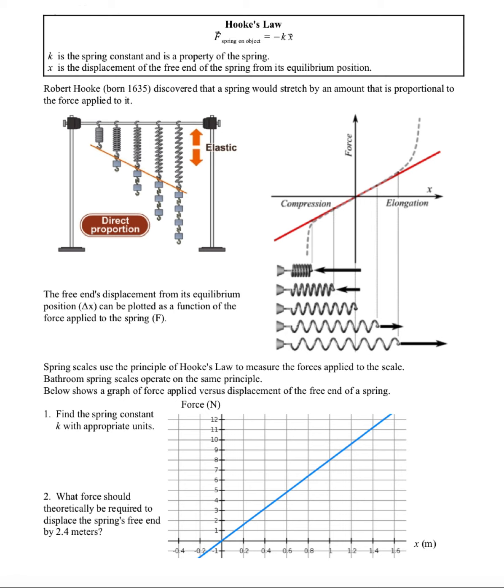Let's take a look at the graph below and see if we can find the spring constant K and give appropriate units for K. So what we're going to want to do here is rearrange Hooke's law. What we'll find is that the spring constant is going to be the slope of the force versus displacement graph.